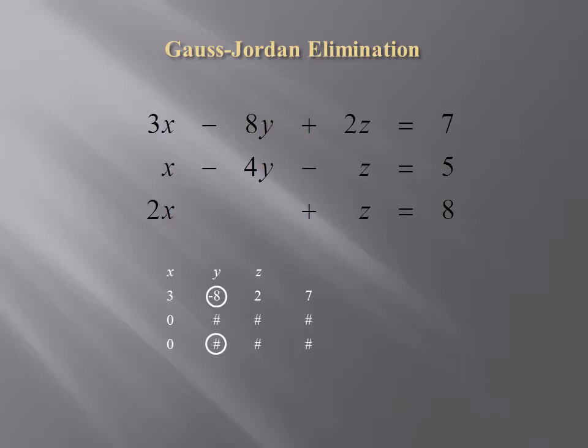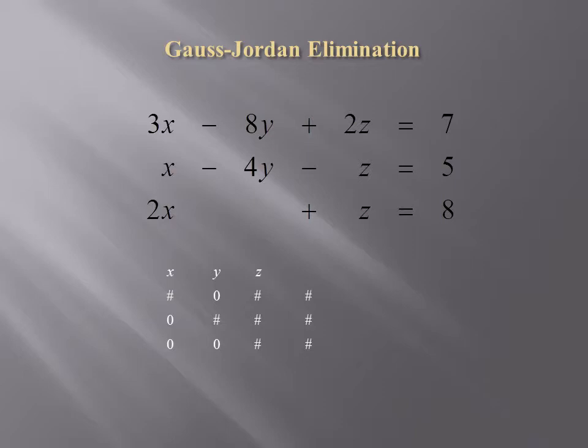What we're doing now is eliminating the y variable from the first and the third equations. The row operations used to accomplish this task again appear to the right of the matrix. You see that the numbers in the first and third rows have now changed. Finally, we want to get a 0 in the first and second row of the third column, essentially eliminating the z from the first and second equations. This process is pivoting on the number in the third row, third column.